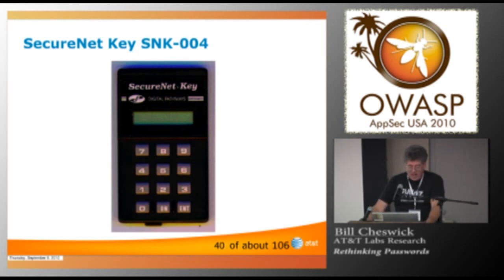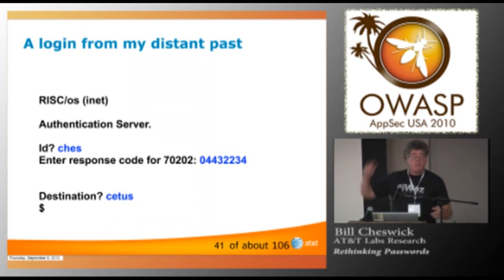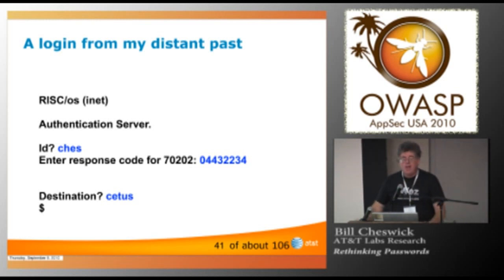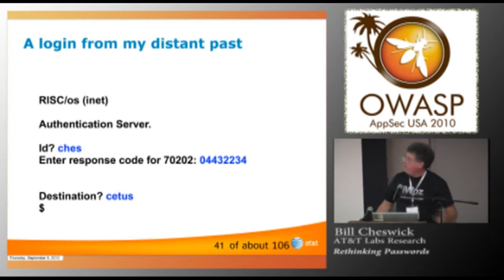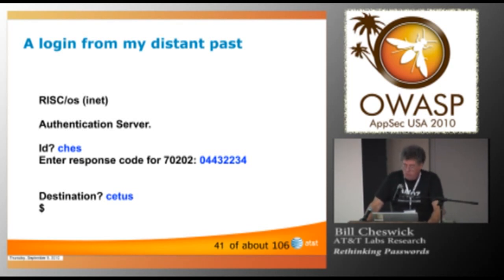Here is an actual login that I did back in the mid-90s to an actual machine. The idea was, I said it was Chez. It gave me a challenge. I computed the response on this little device I carried around. And it said, you're in. Now, it means I have to have the device and do a couple extra steps. But it also means I'm out of the stupid password game. There are no magic rules. There's no eye of newt stuff. I just do it and it works. If I lose it, well, that's inconvenient. But people are used to needing to have keys for their cars. Why shouldn't you have to have a key for your computer if it's something important? This doesn't seem like an unreasonable request.